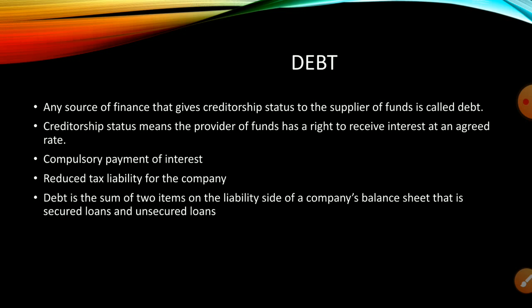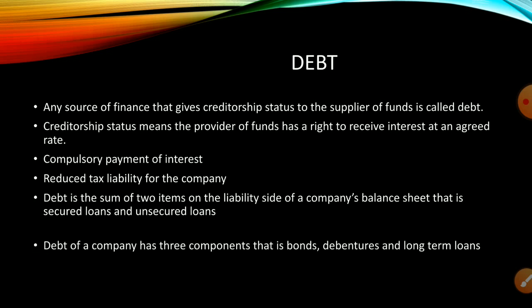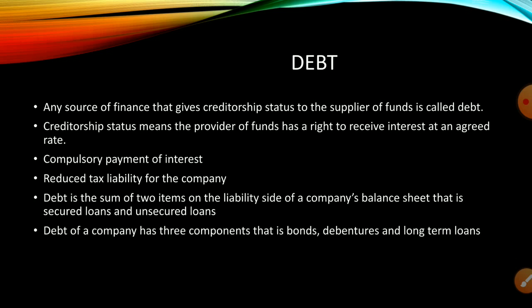A secured loan requires the creation of a charge on specific assets in favor of the lender. Without repaying the secured debt, the company cannot sell the assets on which a mortgage is created. Unsecured loans are those where no charge is created on any assets. Generally, the debt of a company has three components: bonds, debentures, and long-term loans.